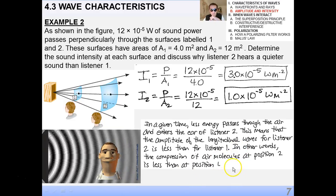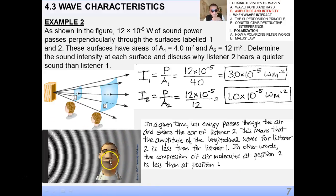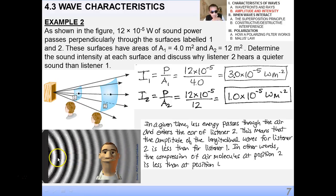This means that the amplitude of the longitudinal waves for listener 2 is less than for listener 1. In other words, the compression of air molecules at position 2 is less than at position 1. And here's a nice, cute, PhET simulation with this guy sitting in front of a speaker. And you can see that, in fact, the intensity or amplitude of those waves gets less as they spread out through the room to the right.